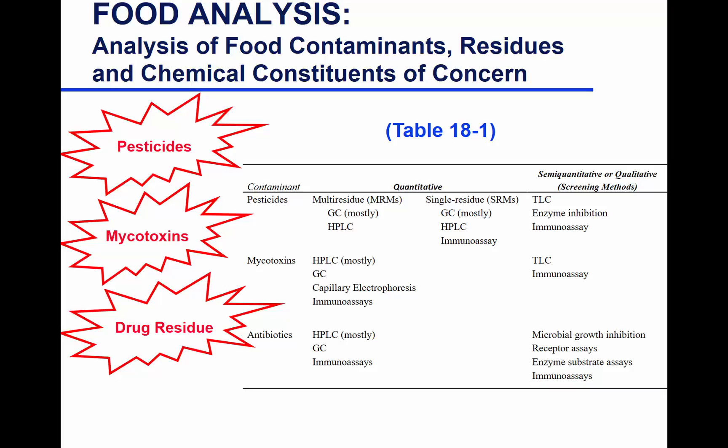Many new pesticides are emerging from non-polar to polar, so many HPLC methods are being developed. Single residue methods (SRM) are developed from extraction through quantification to detect one type only. Mycotoxins are mostly analyzed by HPLC because they are mostly polar, with some GC methods using derivatization, plus capillary electrophoresis and immunoassays. Antibiotics are also mostly analyzed by HPLC, with GC and immunoassay options, plus several screening methods.